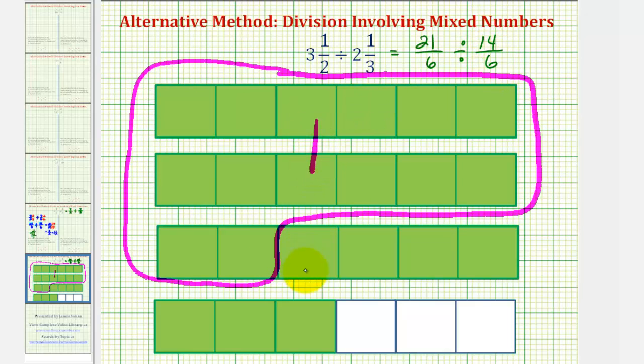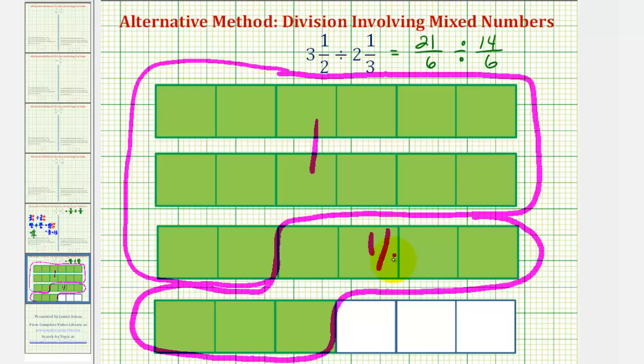So all of these pieces here represent one 14-sixths, and notice how we have pieces left over. We have seven pieces, or seven-sixths, which is actually half of 14-sixths. So the remaining pieces represent the half that we found. So there are one and one-half 14-sixths in 21-sixths, or one and one-half two and one-thirds in three and a half.